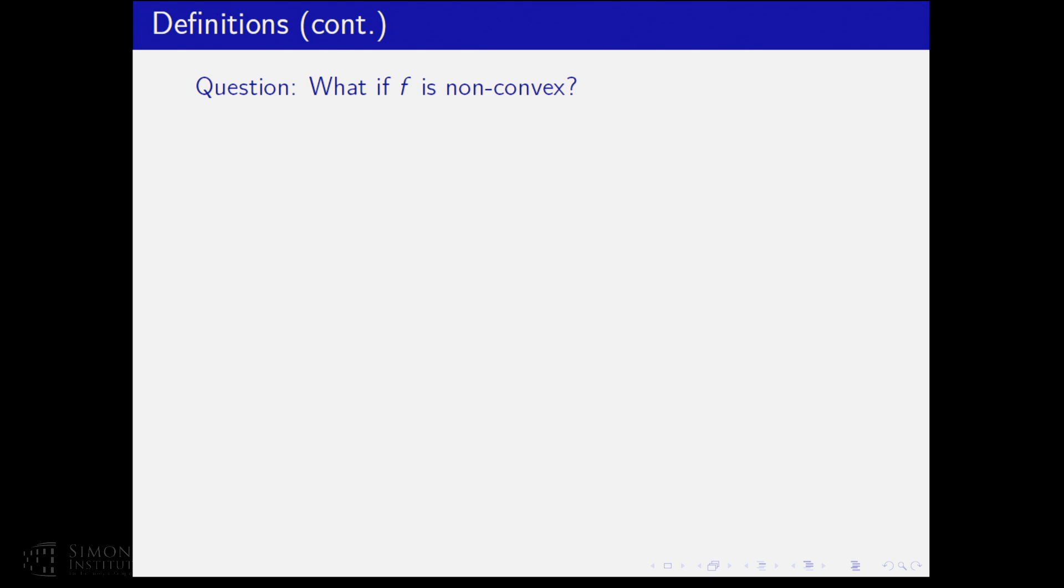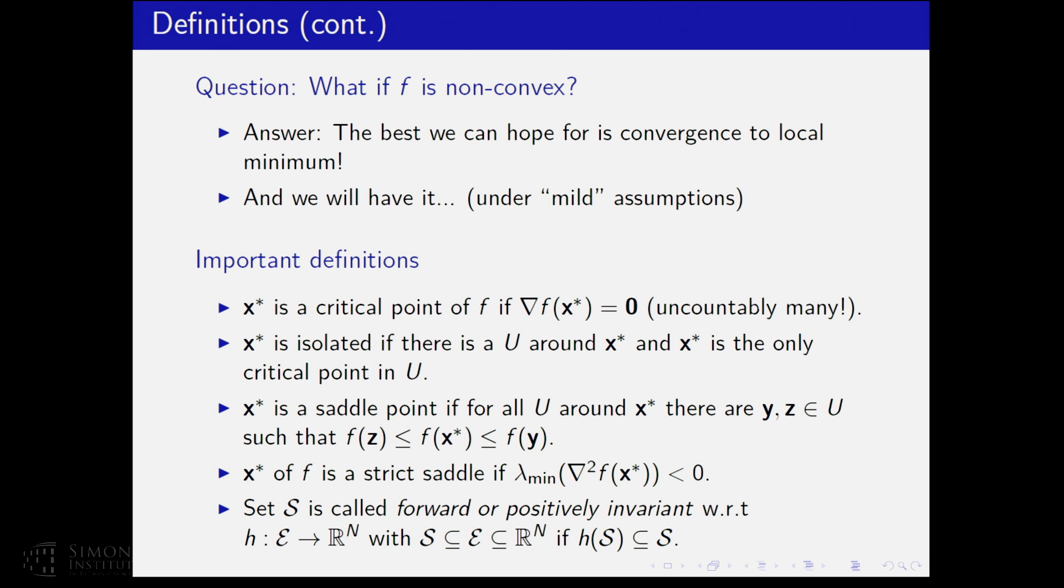So in this case, the fixed points are exactly the critical points of function f. So there exists a folklore lemma which says that f is decreasing along the dynamics of gradient descent. So basically, f is a Lyapunov function of this discrete time dynamical system. And this can give you guarantees about convergence but set-wise convergence to fixed points, meaning that your dynamics converge to a set which is a set of fixed points, but doesn't have to converge to a specific point. So, if your function f is convex, then you have a global minimum, then you have convergence to the minimizer. But what happens if f is non-convex? In this case, you have multiple local optima.